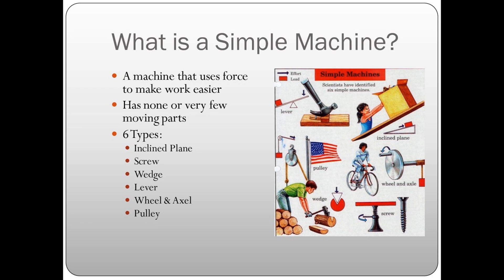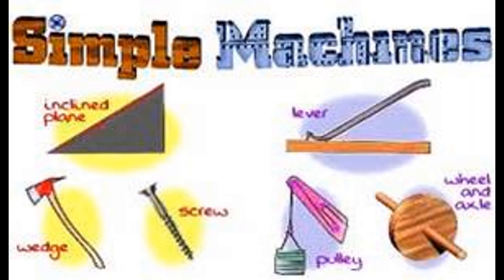Let's go straight into our lesson on simple machines. A simple machine is a machine that uses force to make work easier. It has none or very few moving parts. There are six types: we have the inclined plane, we have the screw, we have the wedge, we have the lever, the wheel and axle, and the pulley.